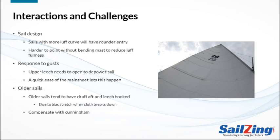Only later did I learn why. As sails get used, the cloth stretches, especially along a direction 45 degrees to the weave of the cloth — this is called bias stretch. In simple terms, if the sail is loaded along the bias, it will stretch more in that direction. In many cuts of sails, this makes the aft portion of the sail fuller, also resulting in a hooked leech. Thus, using the Cunningham can help older sails perform better.